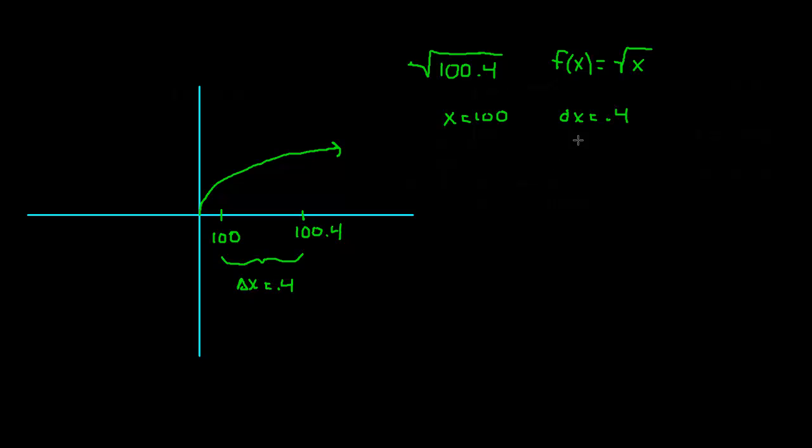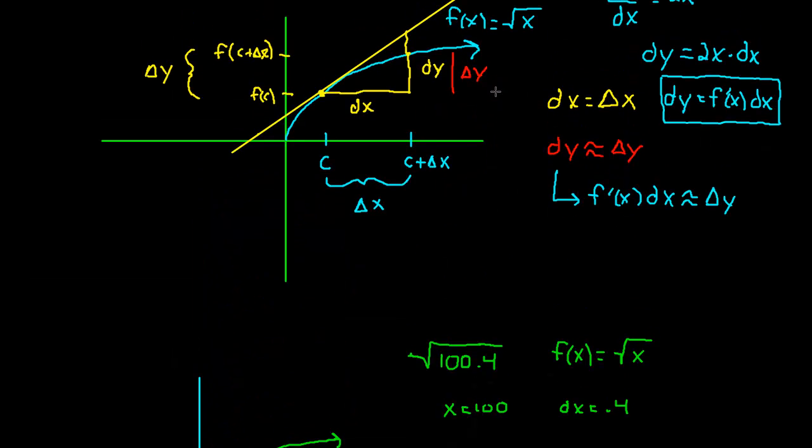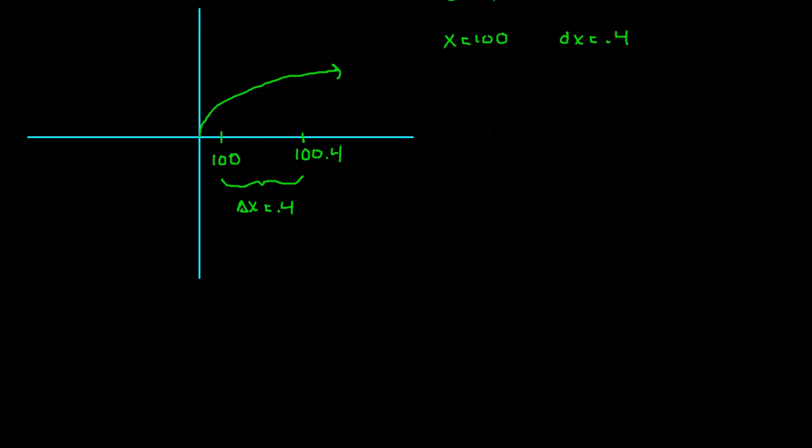Now I wrote delta x here, I wrote dx up here. Remember from our picture up here that those two guys are actually the same thing, so we can use them interchangeably. So the value that we're actually interested in is this value right here. How high is that thing? How high is this red dot? Well, we know how high this red dot is. This red dot is just 10. And this red dot up here, isn't this f of 100 plus 0.4? That's just f of 100 plus 0.4. That is what we're actually interested in.